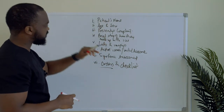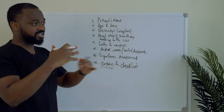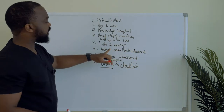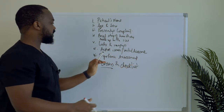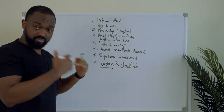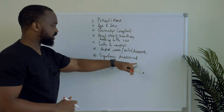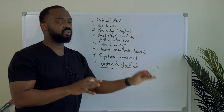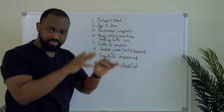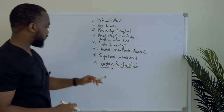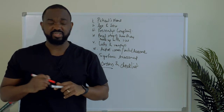So those are the initial things: patient's name, age and sex, presenting complaint, brief story of how they ended up in the ICU, labs and imaging to give a sense of what has been done, active issues and the initial assessment of whoever admitted the patient. Then we do our own systemic assessment. It's always important in the ICU to do things system-based rather than problem-based, so you don't miss anything. Then we'll talk about orders and the checklist.